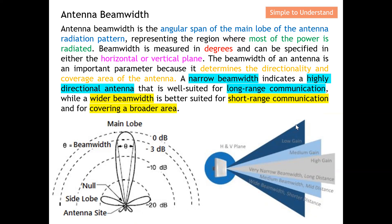A wider beam width is more suitable for short-range communication because the gain is lower. However, it can cover a wider area. So based on different needs, you can design the beam width accordingly. If you want long range, design a very narrow beam width for high gain. If you want to serve more clients, use a wider beam width — the gain will be lower, but you can serve a larger audience.